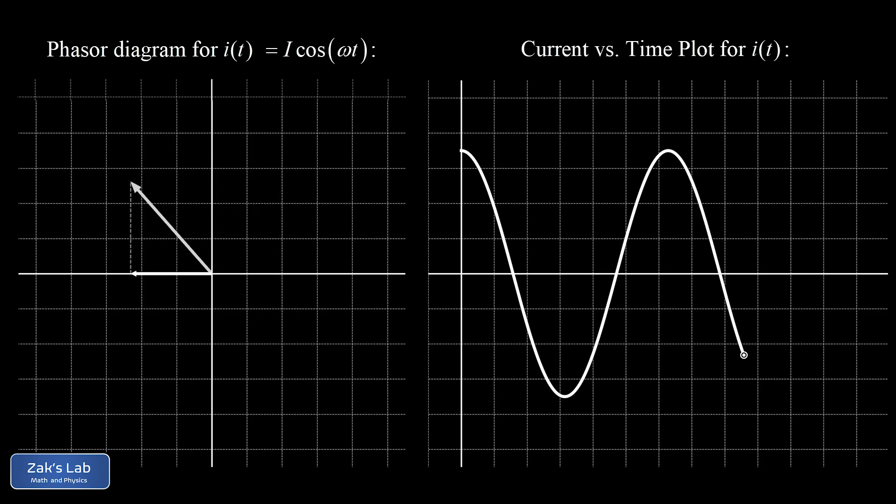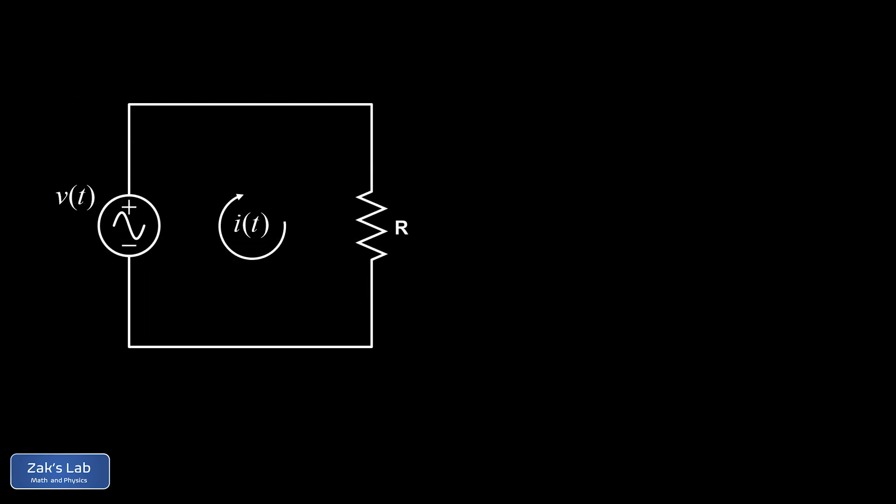So next, we're going to apply the phasor representation to the simplest possible case. And that's a one resistor circuit with an AC voltage source. And what we're after here is an expression for the voltage across the resistor as a function of time. And trust me, things are going to get more interesting with inductors and capacitors, where you have weird phase shifts occurring. But resistors are very straightforward.